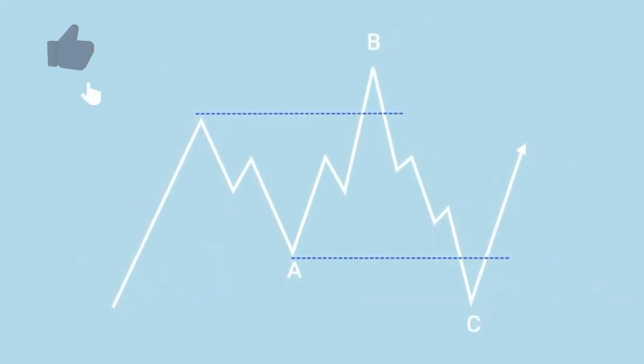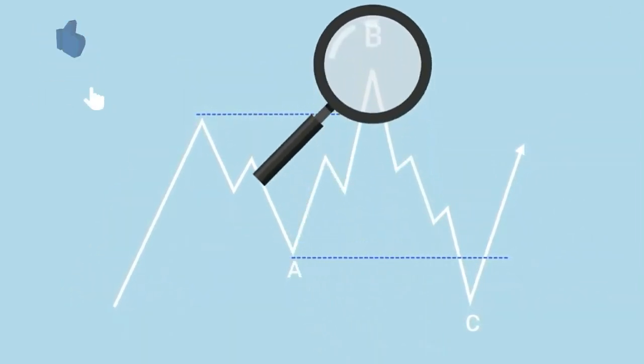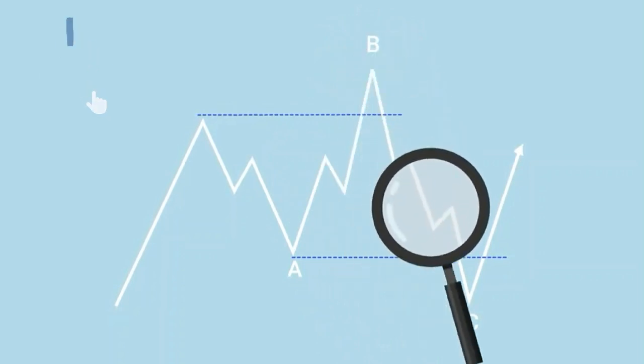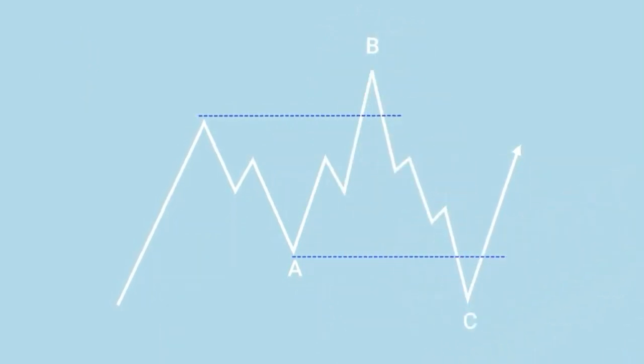It's common for it to have an imperfect formation with wave B even reaching further than the preceding impulse wave. Such variation is called an expanded flat.